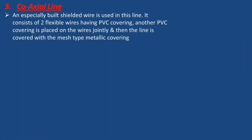Next is the third type: the coaxial line. A specially built shielded wire is used in this line. It consists of two flexible wires having PVC covering, and another PVC covering is placed on the wires jointly.